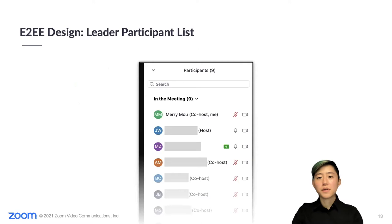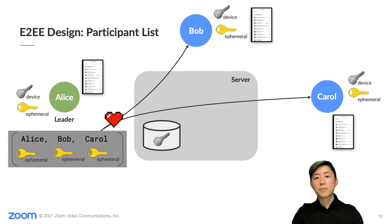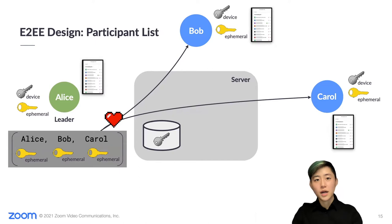Meeting participants need to know who they're in a meeting with. Especially in an end-to-end meeting, we don't want to rely on what the server tells us. Instead, everyone in the meeting wants to know from the meeting leader who the leader has keyed for. So we introduce a leader-driven participant list, which is generated and signed by the leader. The leader sends out regular heartbeats with updates to the participant list. In an end-to-end meeting, the participant list and video boxes in the UI are backed by this leader-driven participant list.